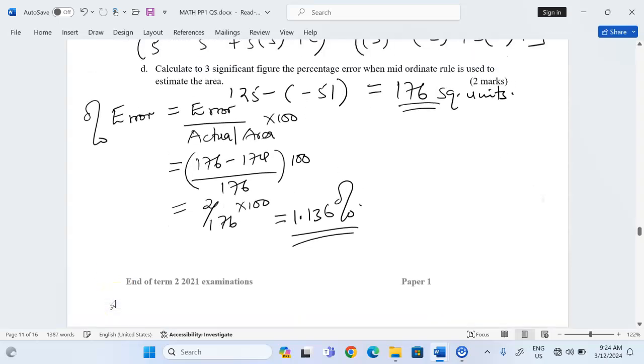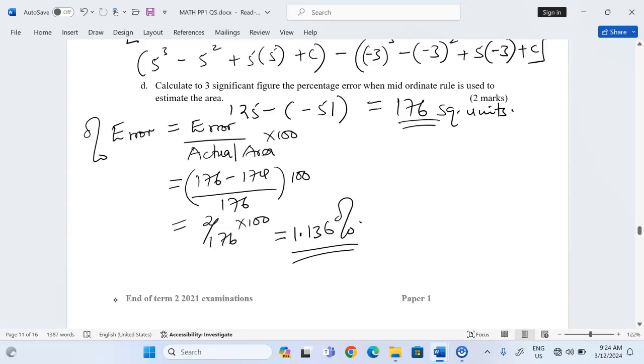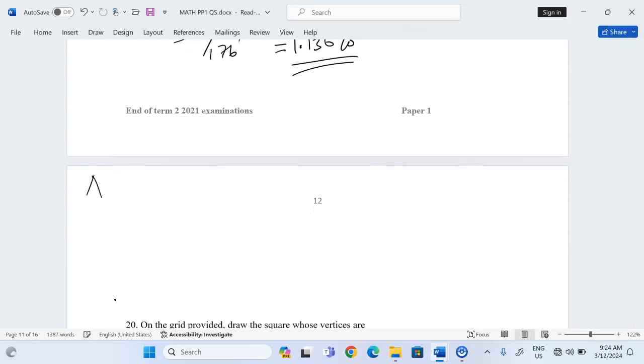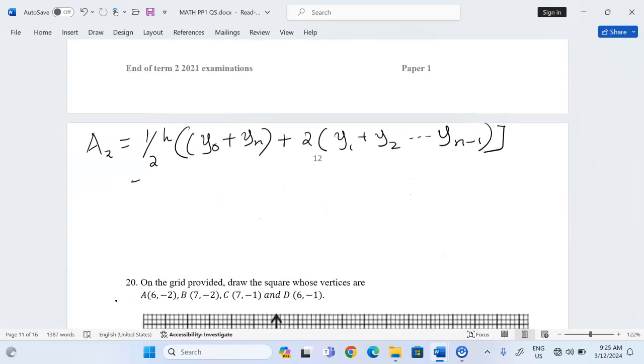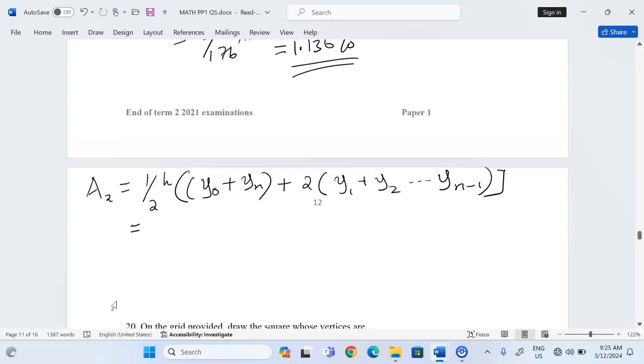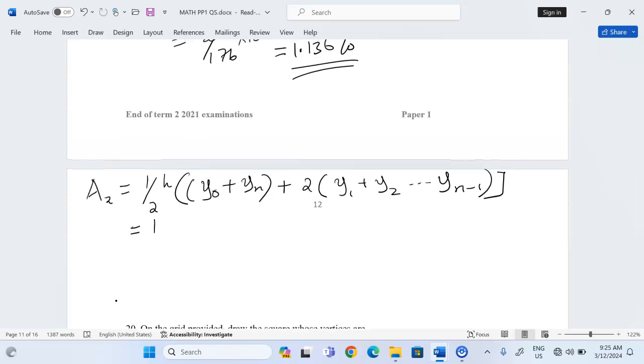Some other times, you can be told to also estimate the area using what we call the trapezoidal rule. The trapezoidal rule is usually given by area equals half H into the open brackets, the first Y plus the last Y plus twice all the other values of Y up to just before the last Y. In the trapezoidal rule, we are going to use the values of Y which are the borders of the strips.